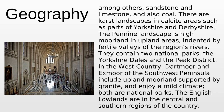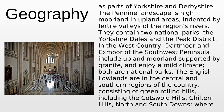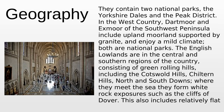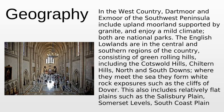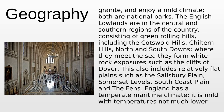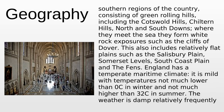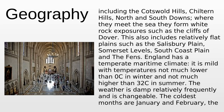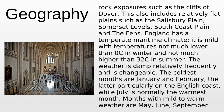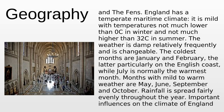The Pennines' geological composition includes sandstone, limestone, and coal. There are karst landscapes in calcareous areas such as parts of Yorkshire and Derbyshire. The Pennine landscape contains two national parks, the Yorkshire Dales and the Peak District. In the west country, Dartmoor and Exmoor of the southwest peninsula include upland moorland supported by granite and enjoy a mild climate. The English lowlands are in central and southern regions, consisting of green rolling hills including the Cotswold Hills, Chiltern Hills, and North and South Downs. Where they meet the sea they form white rock exposures such as the cliffs of Dover, along with flat plains such as the Salisbury Plain, Somerset Levels, and the Fens.